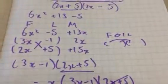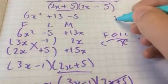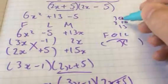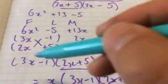Now, some students and some teachers prefer the method of grouping. We multiply the 6 by the 5 and you get 30 and you find two factors that sum to 13 and multiply to 30. But that's another technique. This is the one that I prefer.